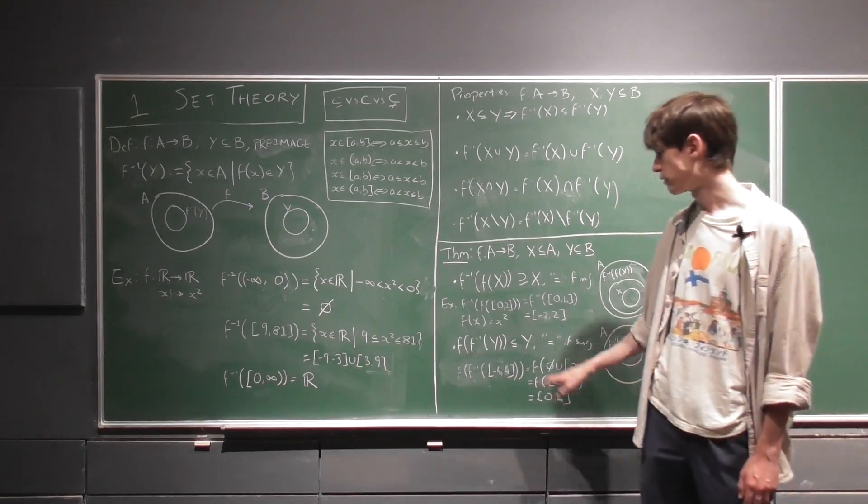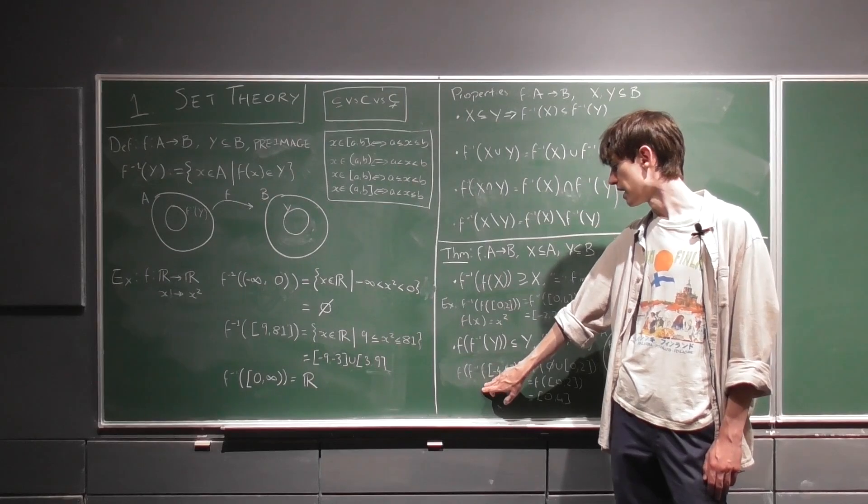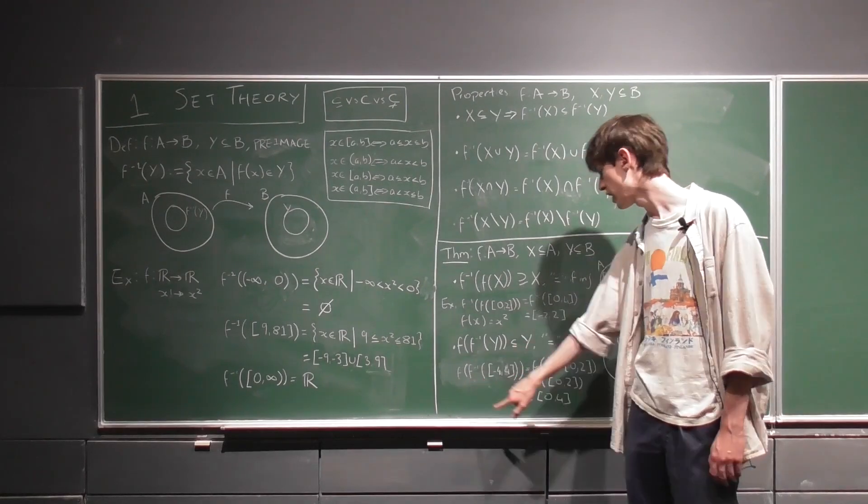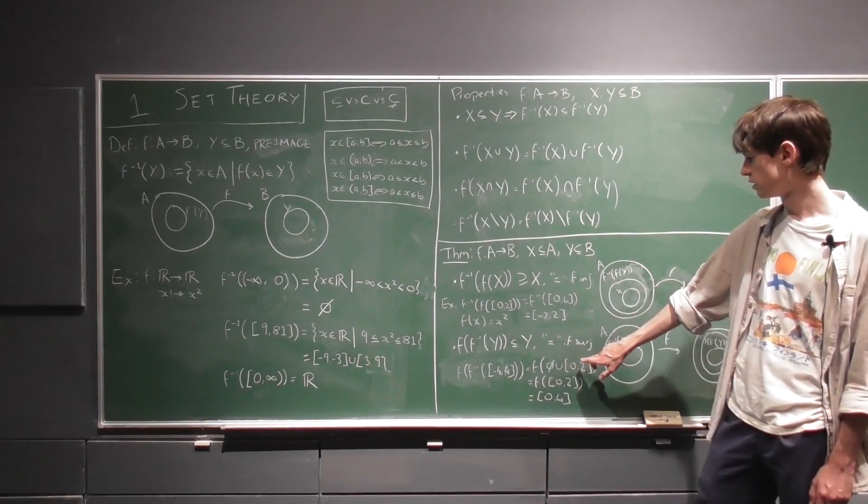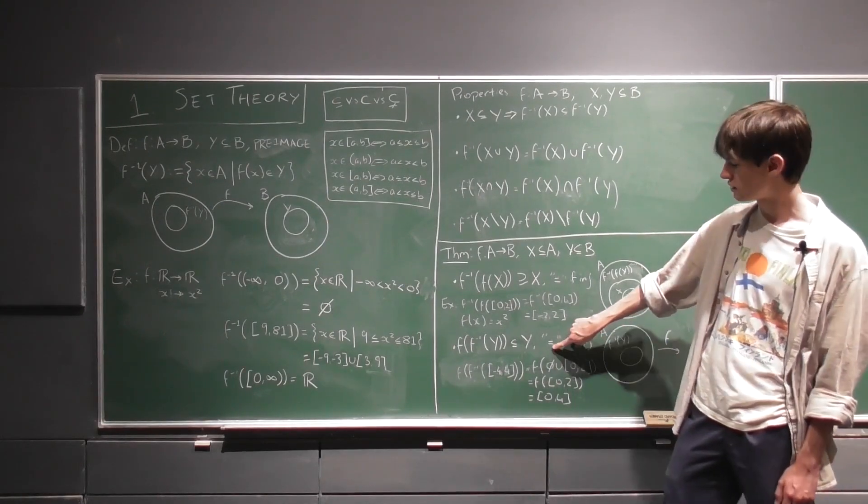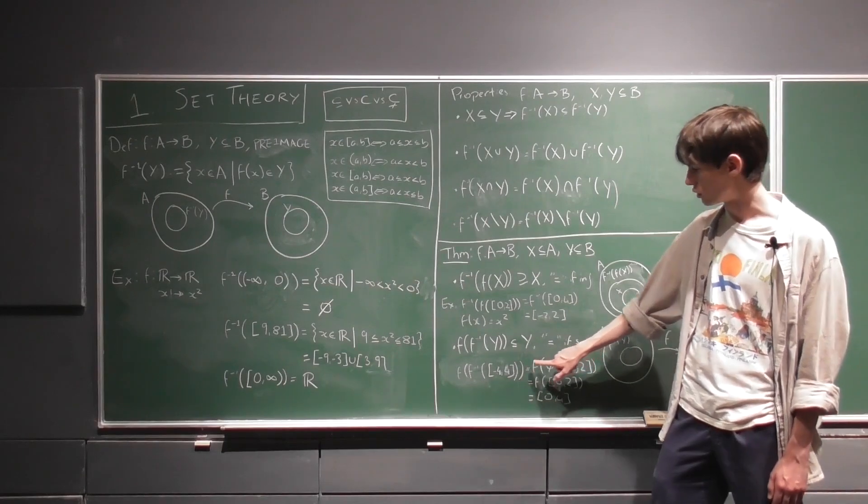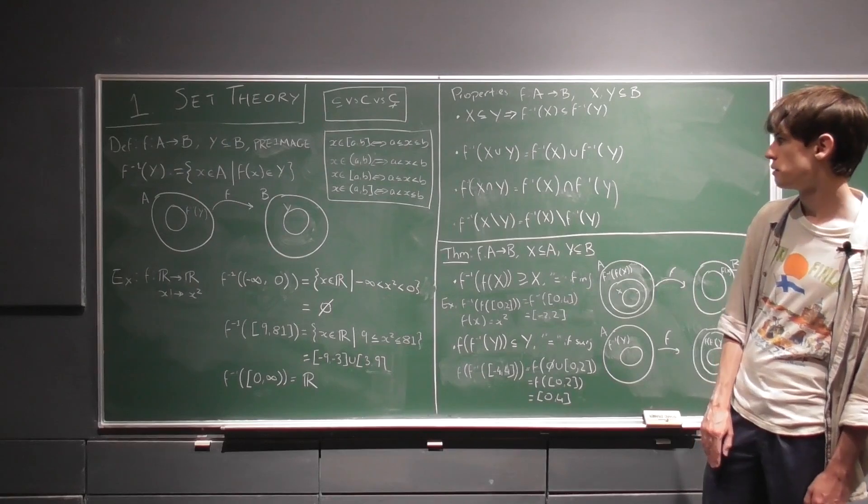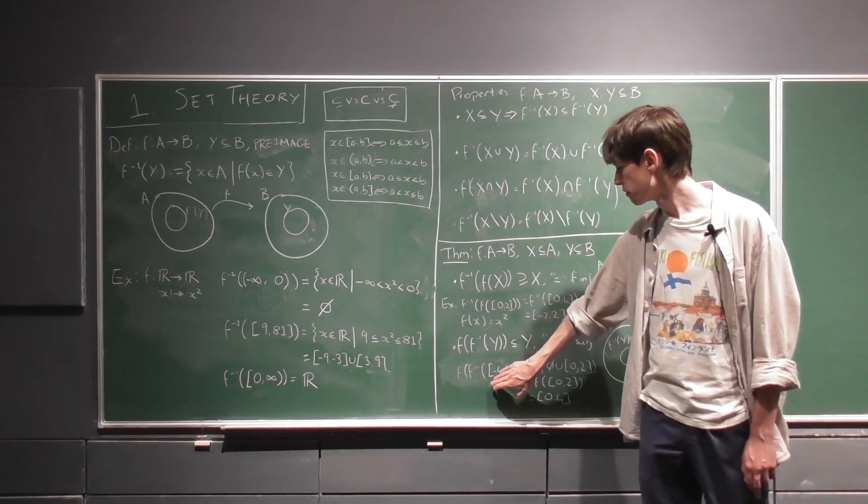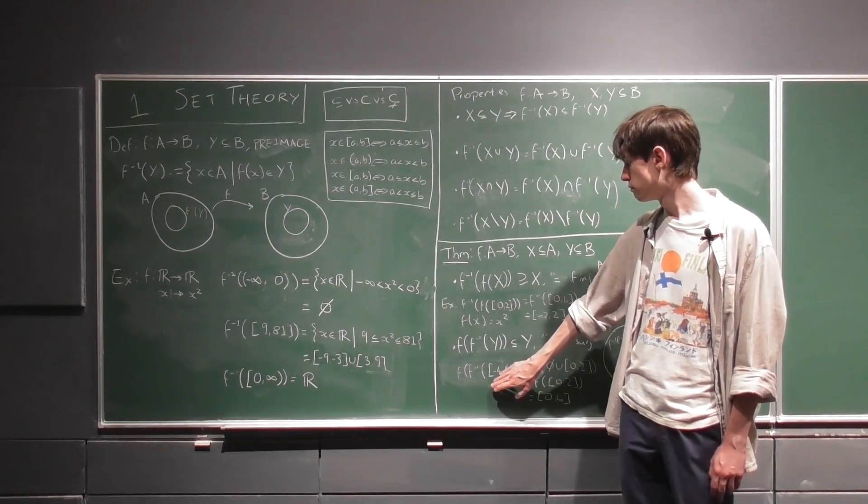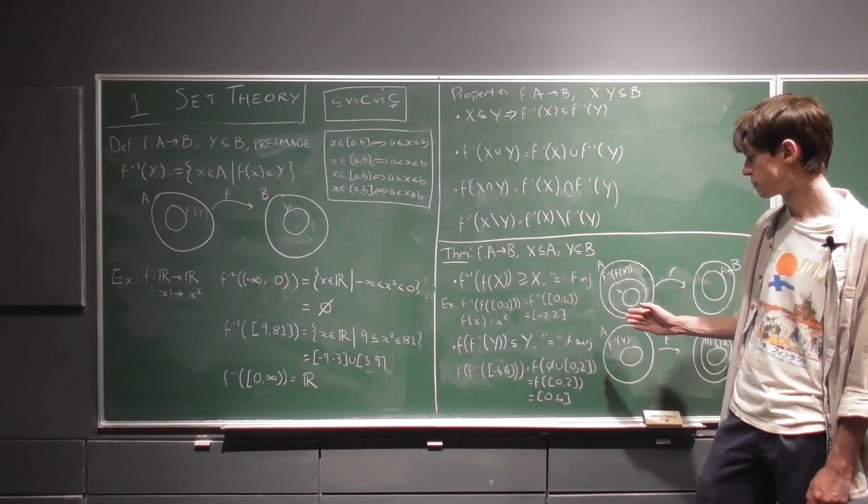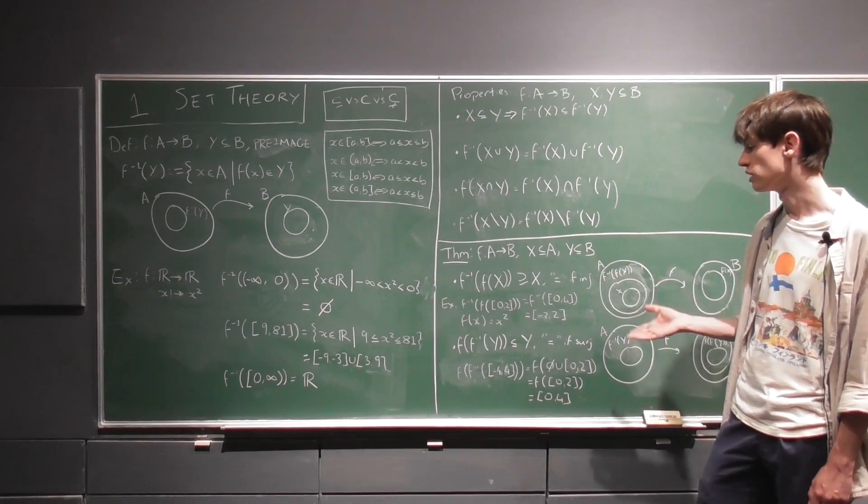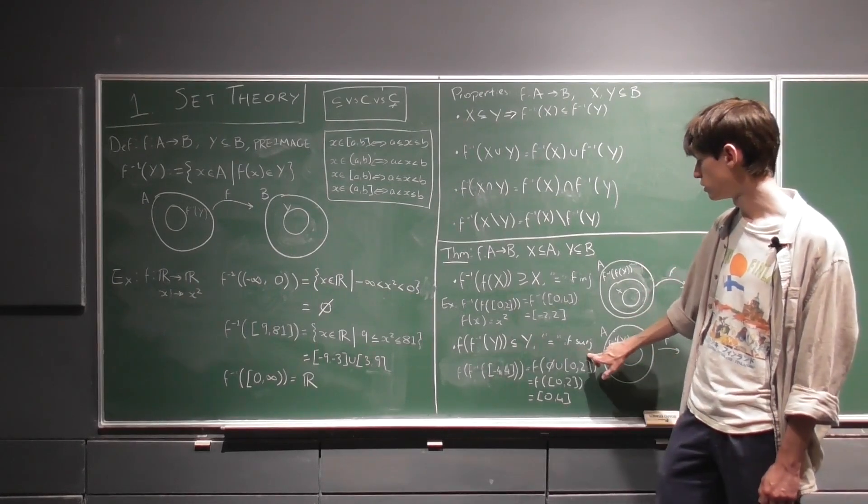So again, the same counterexample, f of x equals x squared. We have the interval now minus 4 to 4. Its pre-image will be the null set union 0 to 2. So I've just written this for clarity because, of course, the sort of half of this interval, its pre-image will be the null set because from minus 4 up to 0, none of those numbers are any real number squared.